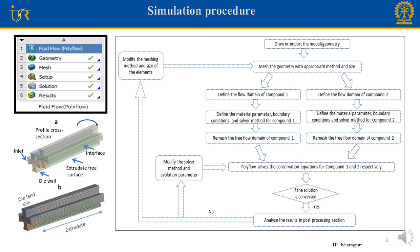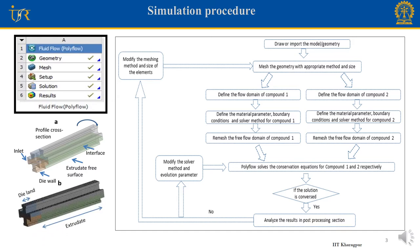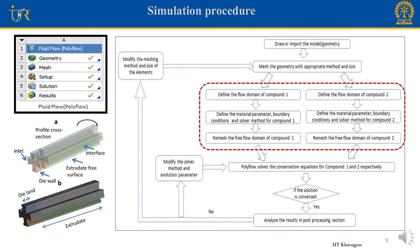We mesh the domain according to the geometry using different meshing methods, element types, and element sizes. In the setup section we incorporate the thermal and rheological parameters of the compound obtained from experiments and curve fitting with different models. We then apply the proper thermal and flow boundary conditions and finally remesh the domain which is going to be deformed. After completing the setup we run the simulation, which solves the conservation equations to predict the flow pattern and extrudate deformation. If the solution is converged we analyze the results; otherwise we change the evolution parameters, mesh size, etc., and repeat the simulation.